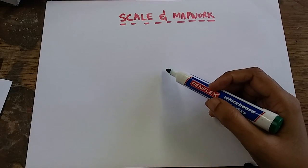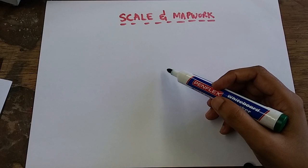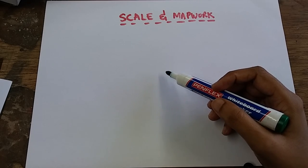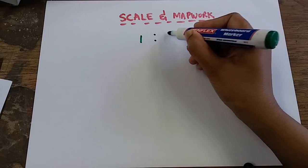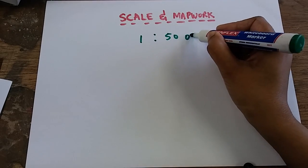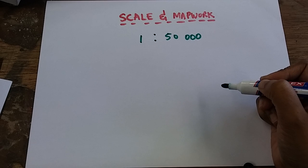Scale and map work. Under scale and map work, we're going to focus on the number scale. So I have a scale 1 is to 50,000. First thing I'm going to do is I'm going to learn how to interpret the scale.